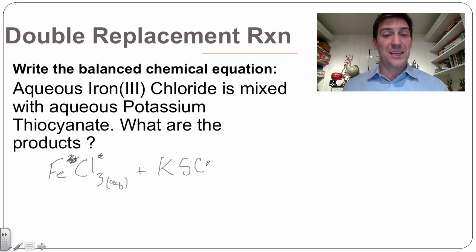Thiocyanate is SCN. It's a polyatomic ion and you'll need to look those ones up. So these all live together as one polyatomic ion, like a carbonate or a nitrate or anything else.